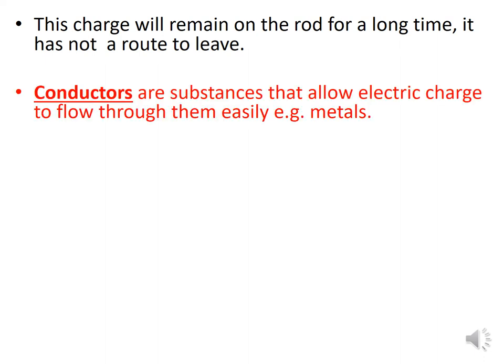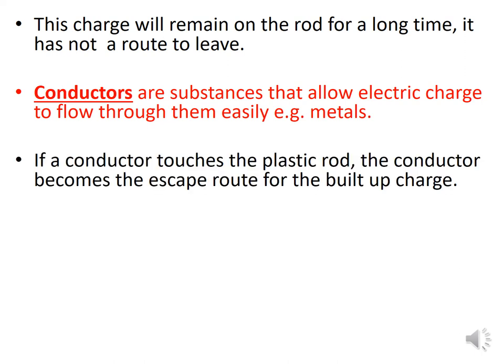The opposite of insulators are conductors. Conductors are substances that allow electric charge to flow through them easily. For example, metals — copper is a common metal used in electrical wiring for that reason. If you had a copper rod, no amount of friction will cause charge to build up, because it flows away through whoever is holding it. If a conductor touches the plastic rod, the conductor becomes the escape route for the built-up charge.